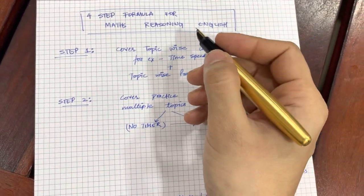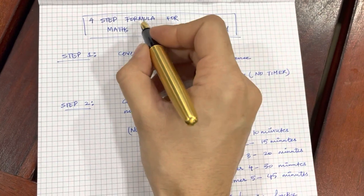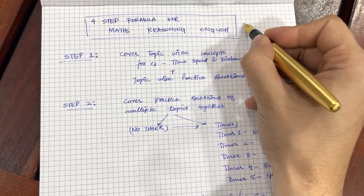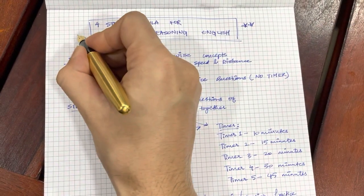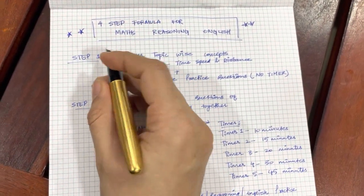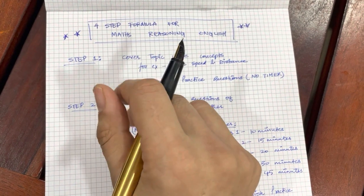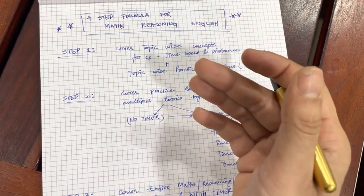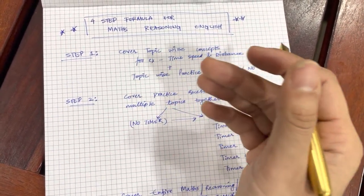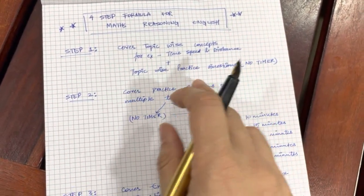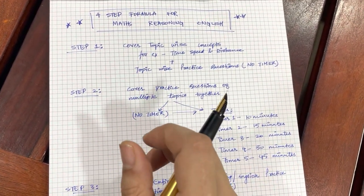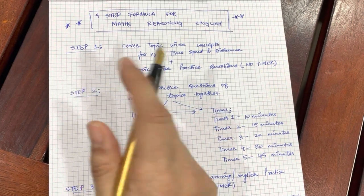Hi everyone. Today I will be talking about the four step formula for Maths, Reasoning and English. I have created a four step formula with which you can easily cover Maths, English and Reasoning from the very basics. You can skip some of these steps if you have already covered them before, but I would recommend that if you are starting from scratch, then you cover all these four steps one by one without skipping any of them. Let us start with step one.